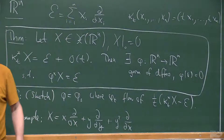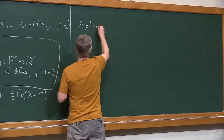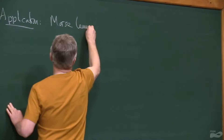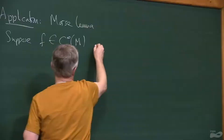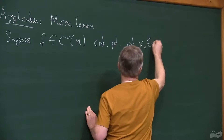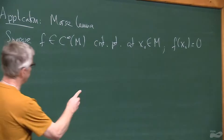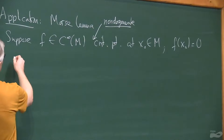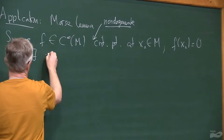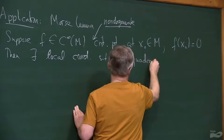Let me give one quick application — the Morse lemma. Morse lemma in R^N says that suppose you have a smooth function with a non-degenerate critical point at some point x₀, and f(x₀) = 0. Then you can find local coordinates in which f is quadratic. The Hessian has to be invertible — that's very important. So there exist local coordinates such that f is quadratic.